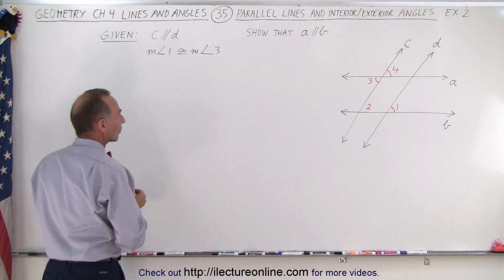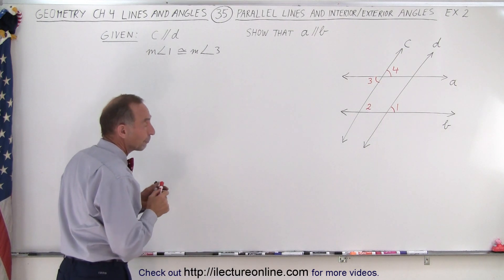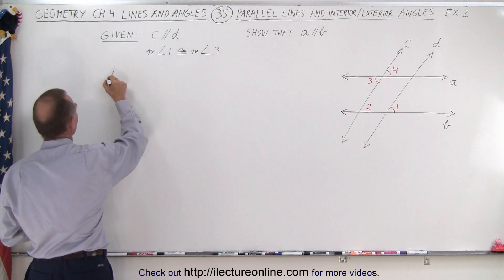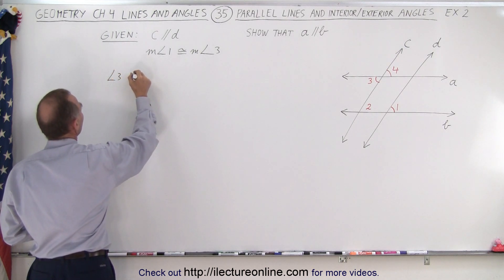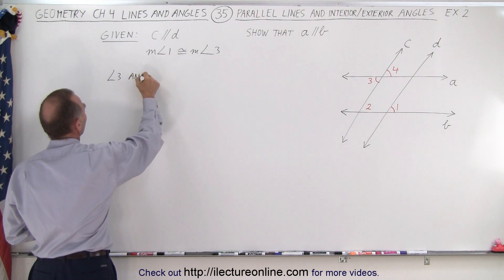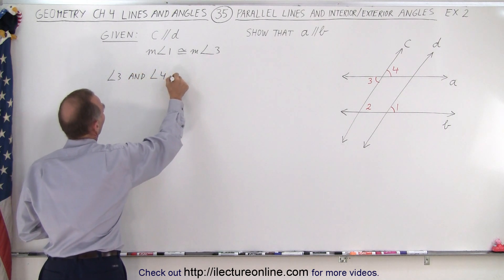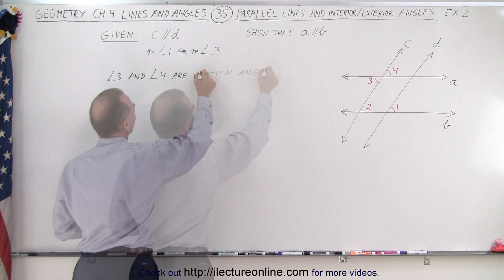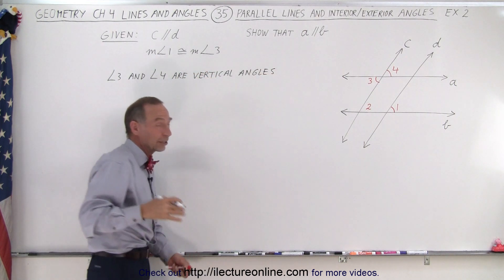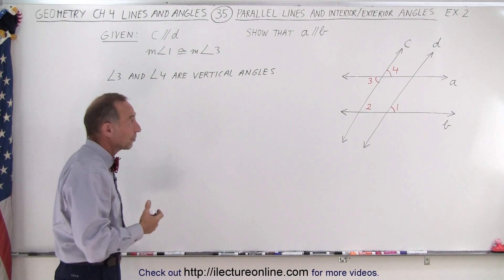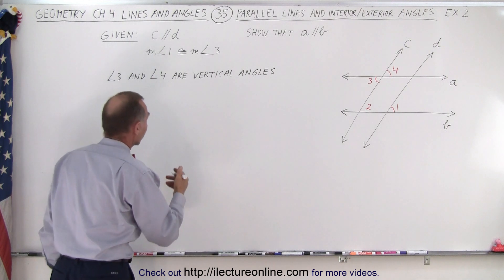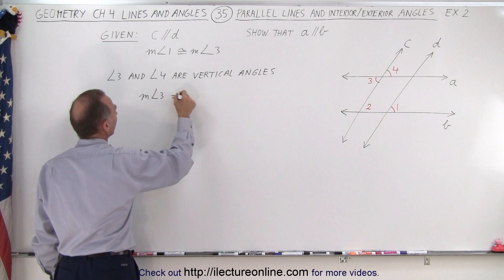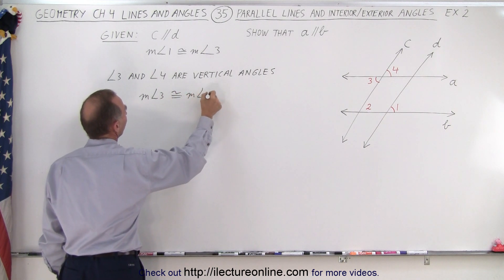So we know that angle three and angle four are what we call vertical angles, or opposite angles. From that, I can conclude that they must have the same measure. Therefore, the measure of angle three is congruent to the measure of angle four.